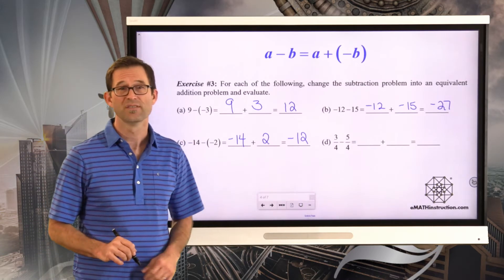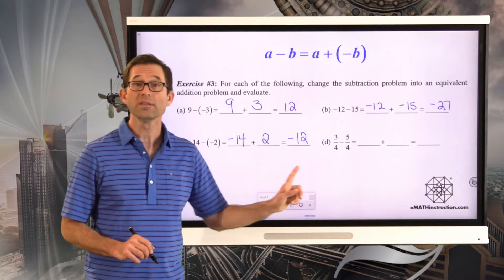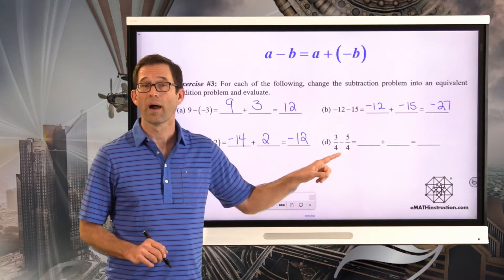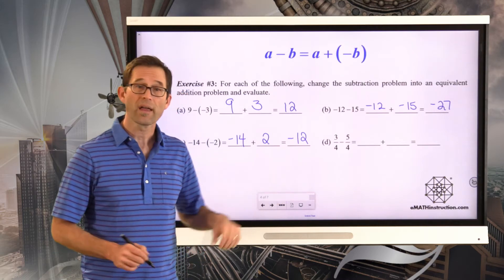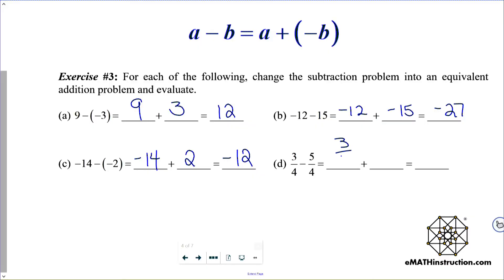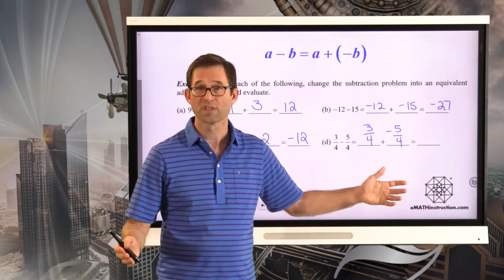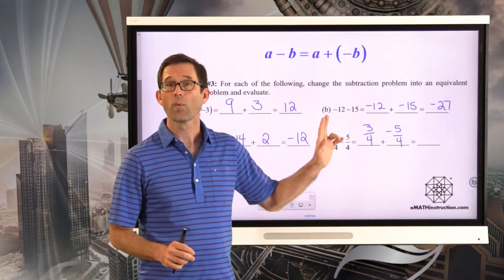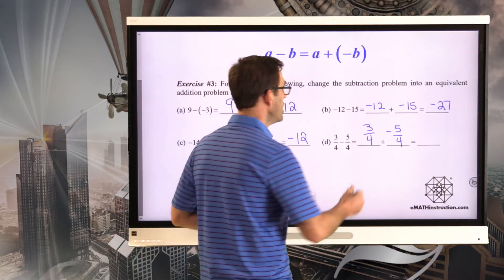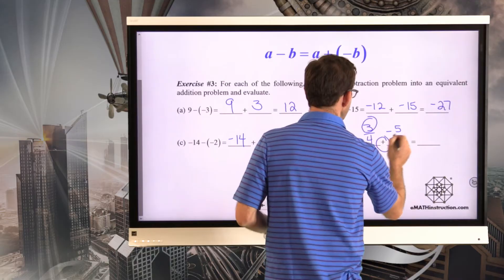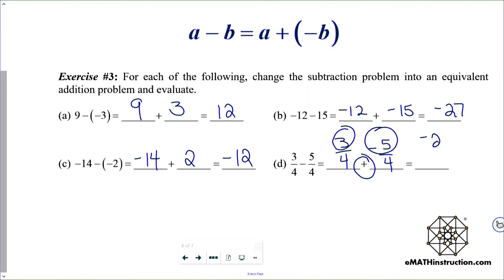Finally, fractions — but at least they have a common denominator. I have 3 quarters minus 5 quarters. I could change that into 3 quarters plus negative 5 quarters. Whenever we add two fractions, we simply leave the denominator the same, so we've still got quarters. What is 3 plus negative 5? Well, 3 plus negative 5 will be negative 2 quarters, or reduced down, negative 1 half.